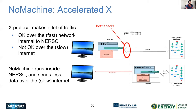Before talking about NoMachine, traditionally you view graphical applications through the X protocol. On the right-hand side is the NERSC system on an internal network. You run a GUI application like MATLAB, and on your side you need an X server on your laptop. The X protocol displays the application on your laptop, but this can be very slow because it's limited by your internet speed.